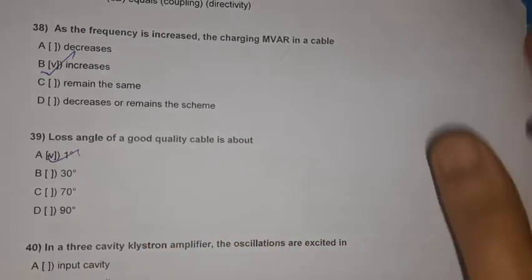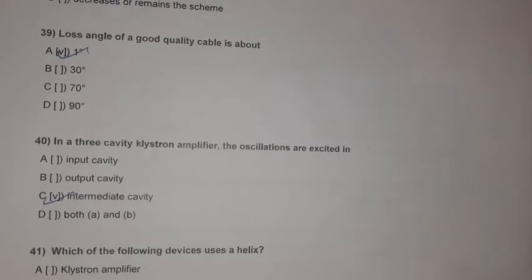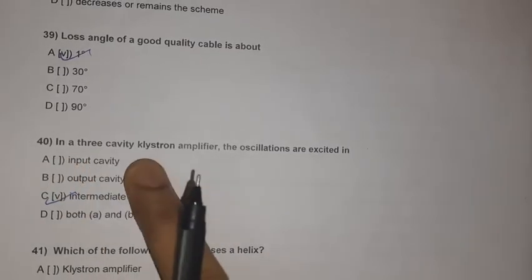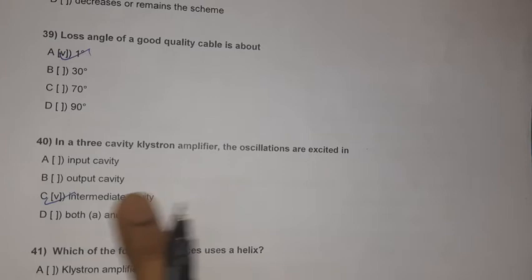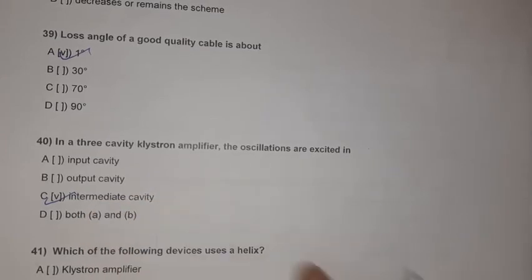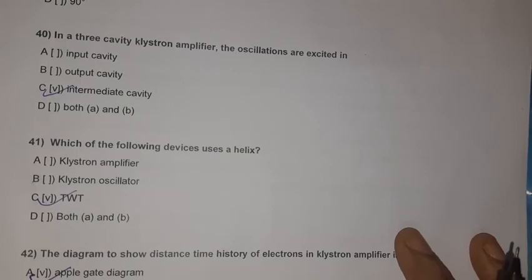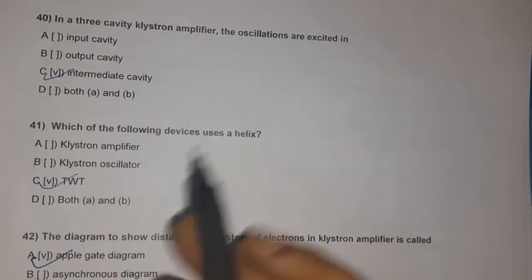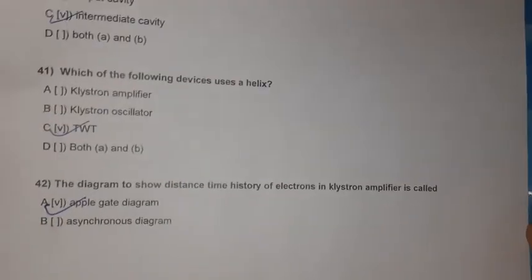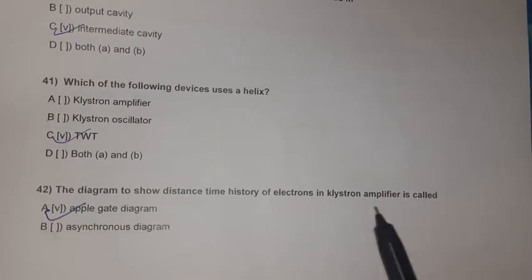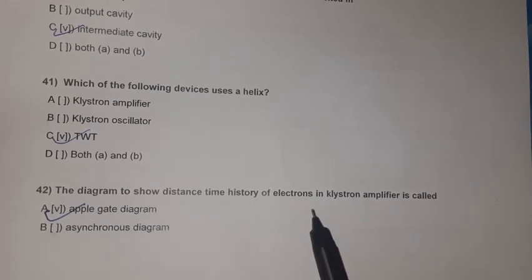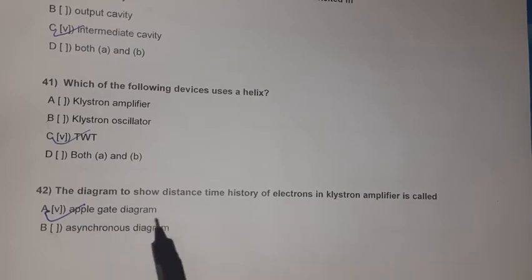Question 40: In a three-cavity klystron amplifier, oscillations are excited in the intermediate cavity. Question 41: TWT (Traveling Wave Tube Amplifier) uses a helix. Question 42: The diagram showing the distance-time history of electrons in a klystron amplifier is called the Applegate diagram.